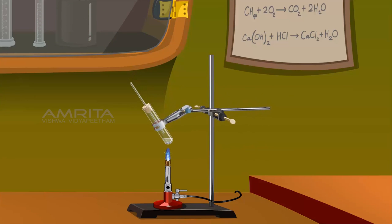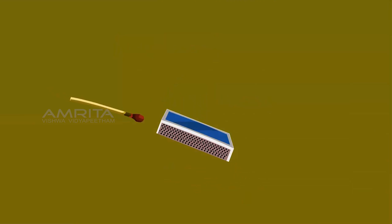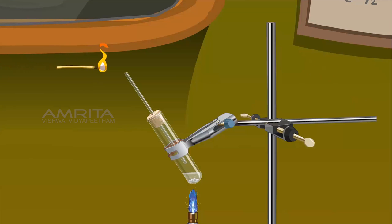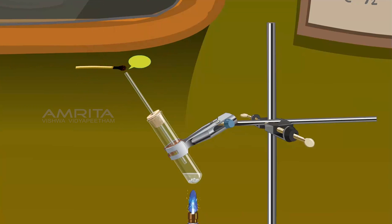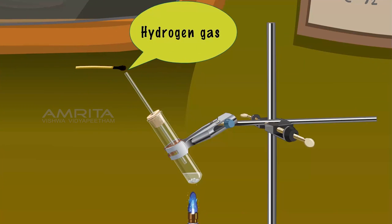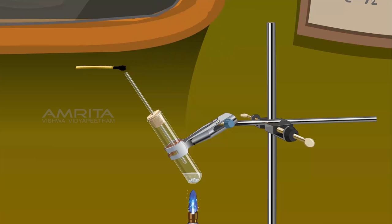Bring the clamped test tube downwards to heat it over the Bunsen burner. Hydrogen gas is evolved on heating. Take the matchbox and light a matchstick. Bring the lighted match near the mouth of the jet tube. Hydrogen gas coming out of the test tube causes the flame to flare up, then with a mild explosion and producing a popping sound, the flame dips out.